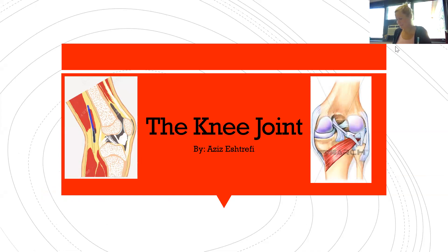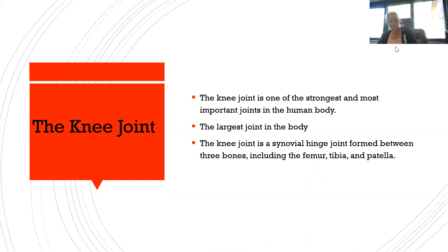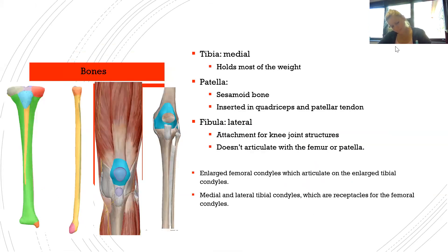The knee joint is one of the strongest and most important joints in the human body. It is the largest joint in the body and is a synovial hinge joint formed between three bones: the femur, tibia, and patella. The tibia is medial, holds most of the weight, and is shown here in green.